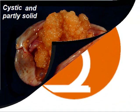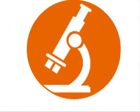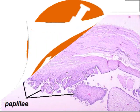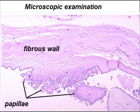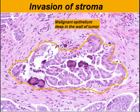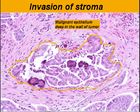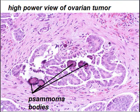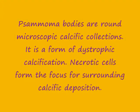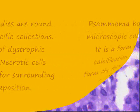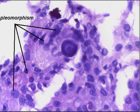We take a section from this tumor and observe under microscopy. The microscopic examination reveals a fibrous wall of the tumor and complex papillae. Deeper, there is invasion of stroma. The malignant glands are present in the wall of the tumor. There are psammoma bodies — as you can see, concentric, round, calcific structures. Psammoma bodies are calcific collections; it is a form of dystrophic calcification, with calcium salts surrounding necrotic cells.